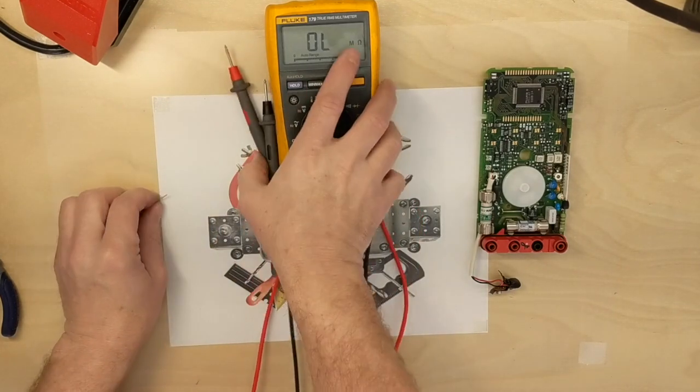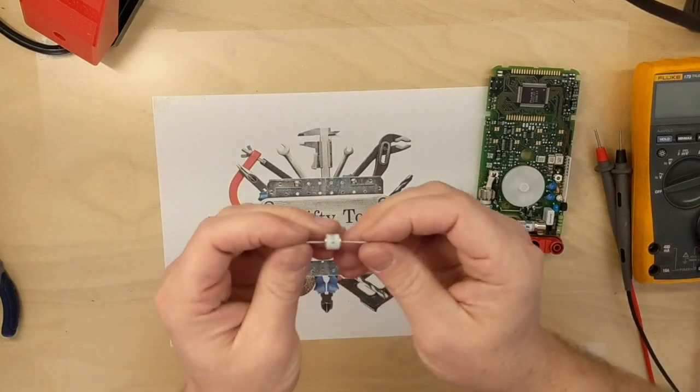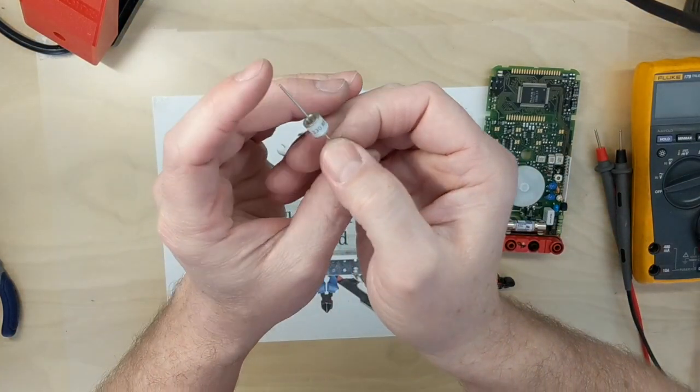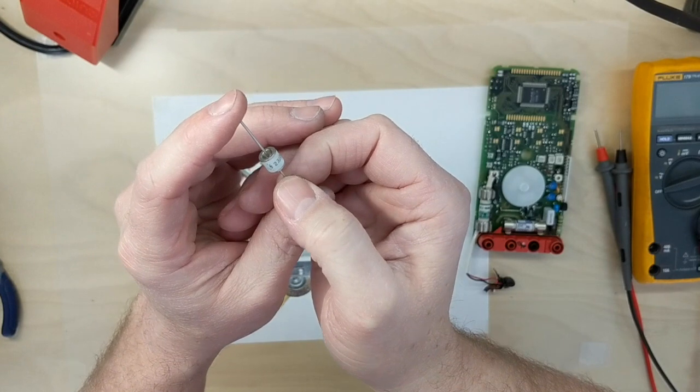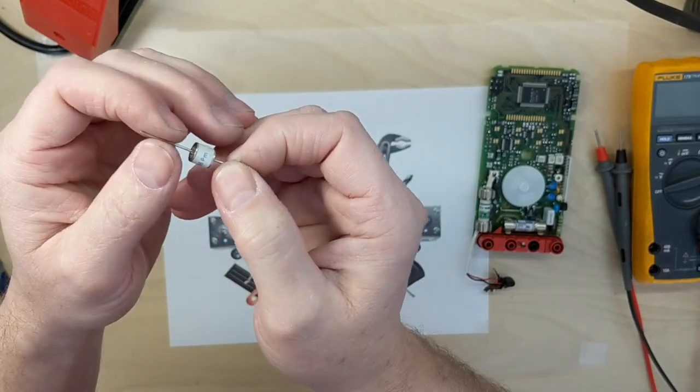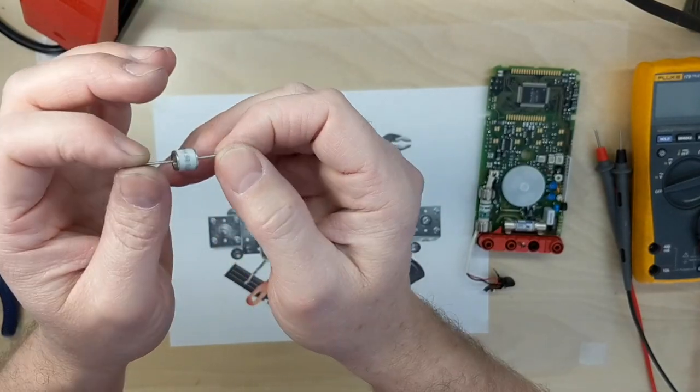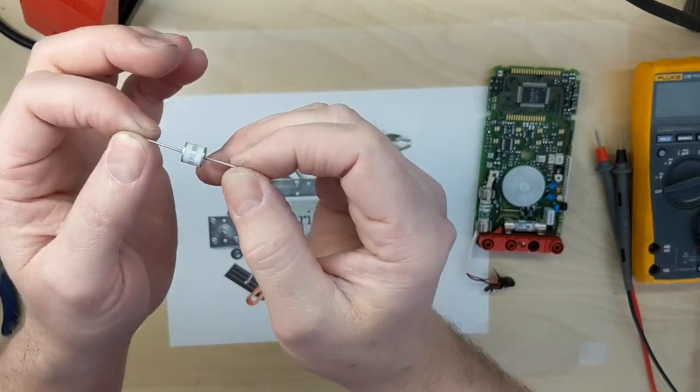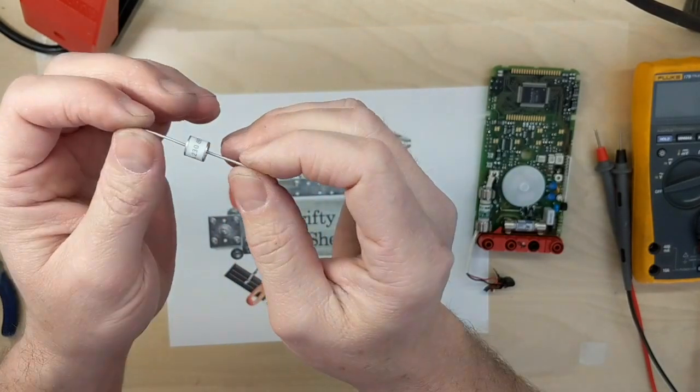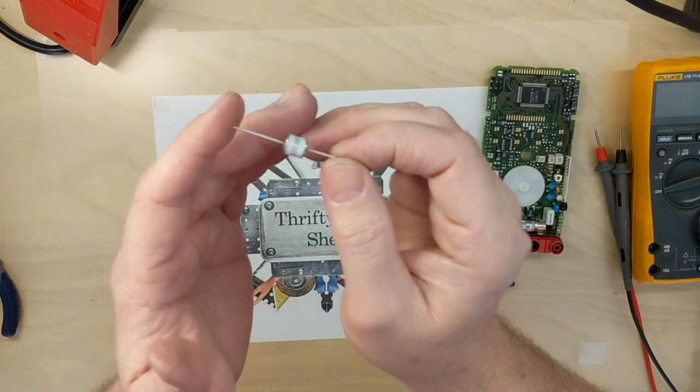If we go to ohms, it is completely open, shows no resistance with just a regular multimeter. And this one's not going to conduct to somewhere around 230 volts. Typical gas discharge tubes, they have what they call a minimum breakdown voltage, a rated maximum voltage breakdown max, and they also rated by how much current they can actually handle.